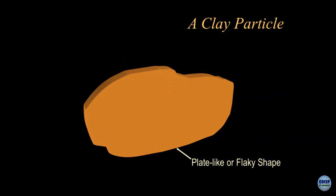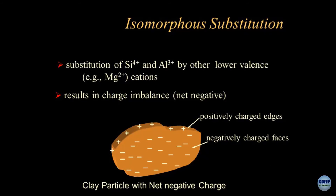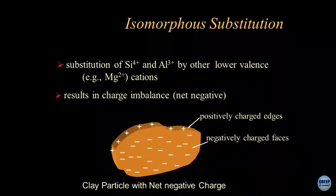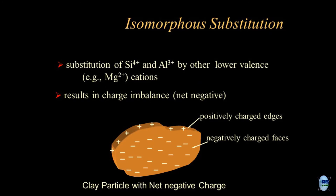If I take one grain of clay, this is how it looks — plate-like or flaky shaped. The plate face is negatively charged because of the very fine particle size; the fundamental charge is negative and it spreads on the surface. On the edges you have positive charge. Bacteria, which is mostly negatively charged, will come and form a bond, holding the clay platelets from the edges.